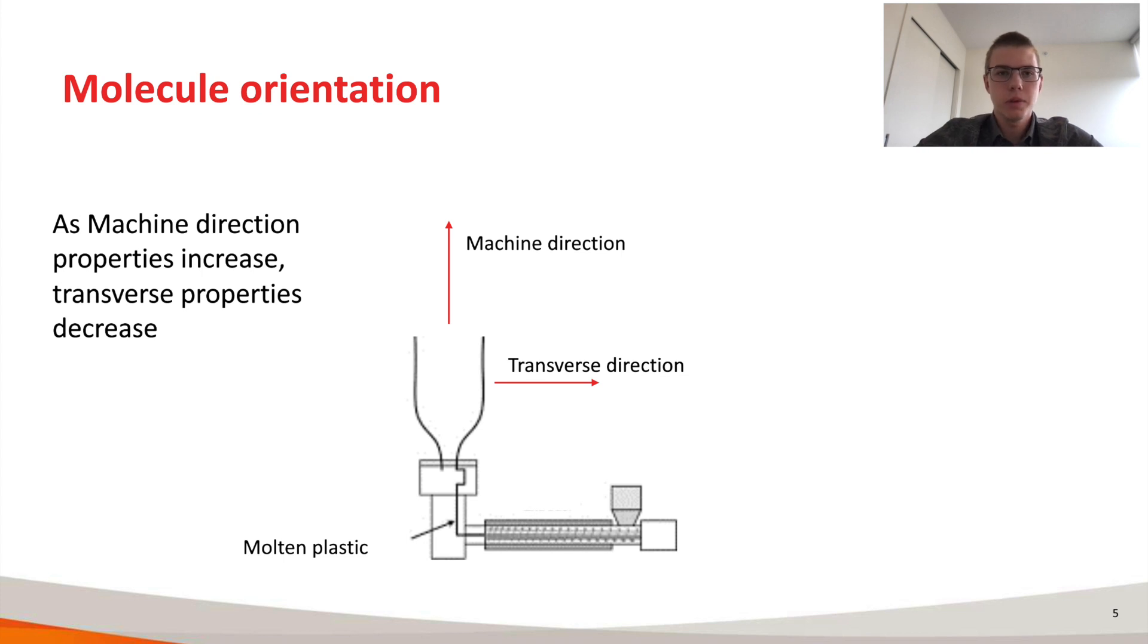For instance, if all the molecules were aligned in the machine direction it would be easy to tear the film in that direction and very difficult in the transverse direction.